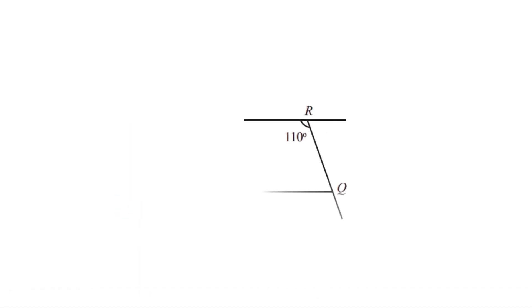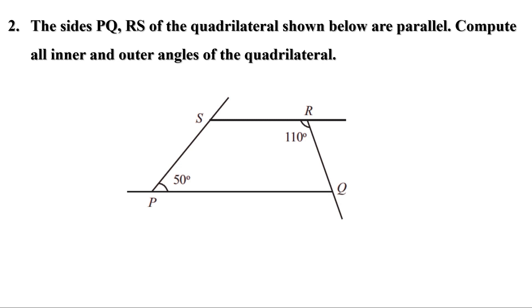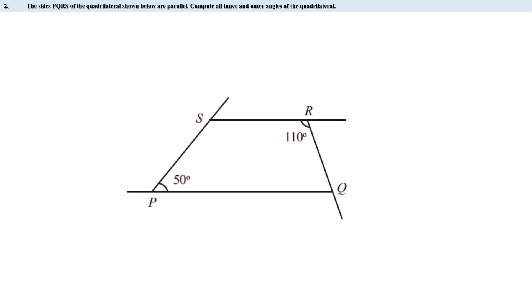Second problem: the sides PQ and RS of the quadrilateral shown are parallel. Compute all inner and outer angles. Given that PQ and RS are parallel, the angles at those vertices form co-interior angles and are supplementary. Since one angle is 50 degrees, the co-interior angle is 180 − 50 = 130 degrees. Similarly, the other pair of co-interior angles sums to 180 degrees. Since one angle is 110 degrees, the other is 180 − 110 = 70 degrees.